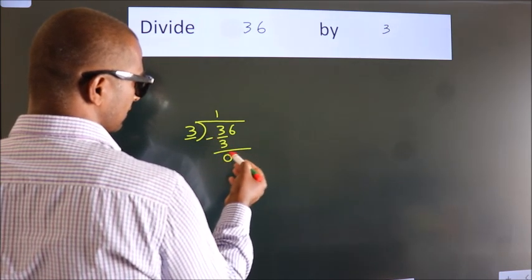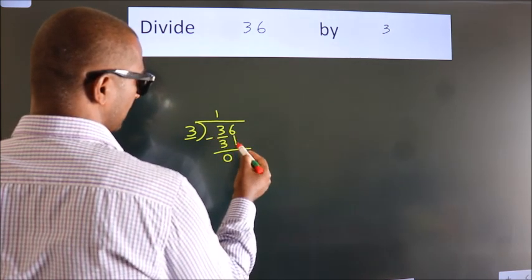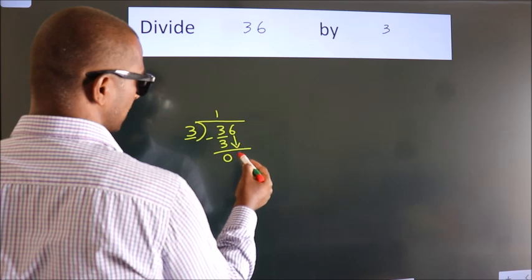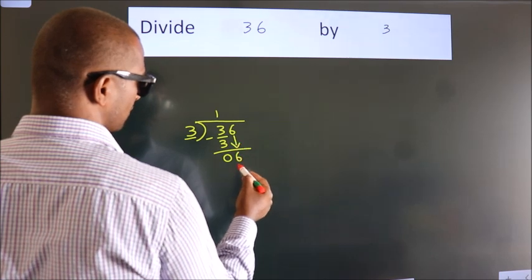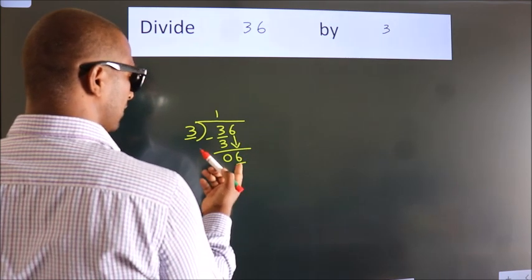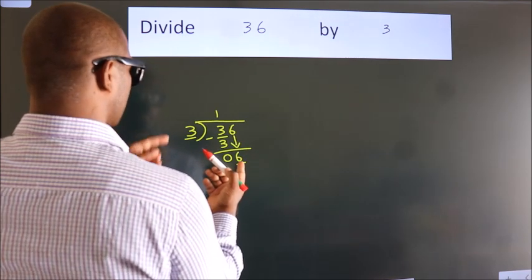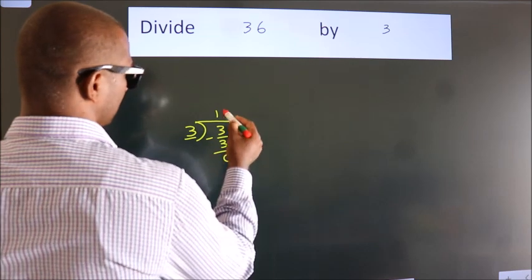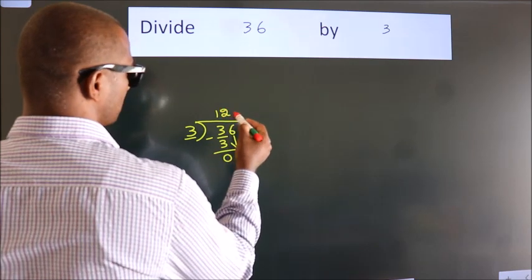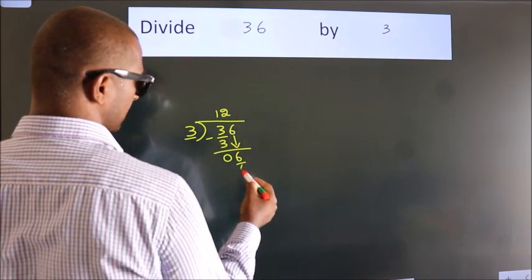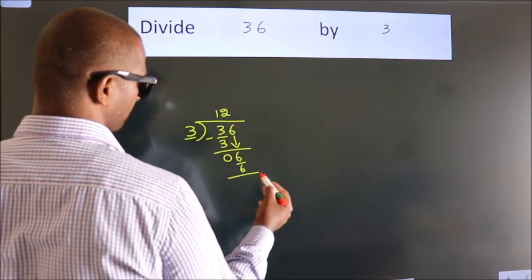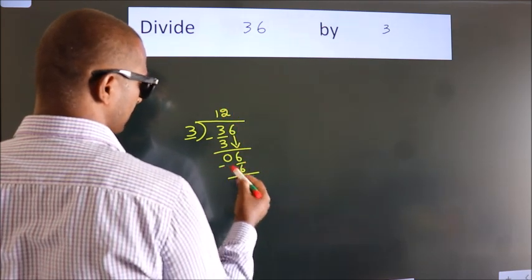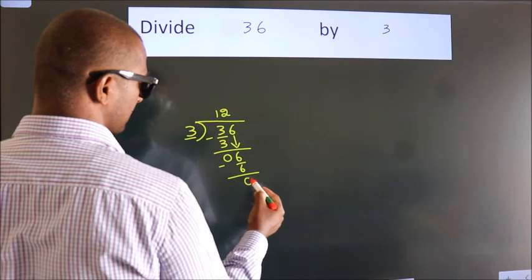After this, bring down the beside number. So 6 down. When do we get 6? In the 3 table. 3 twos are 6. Now we subtract. We get 0.